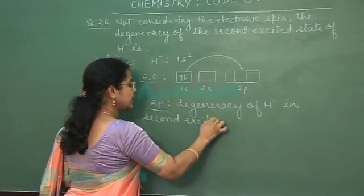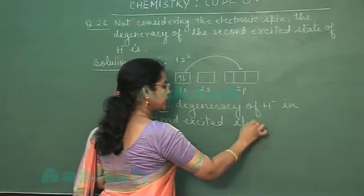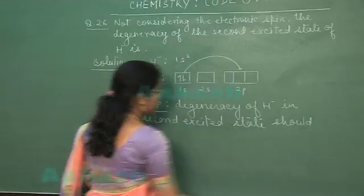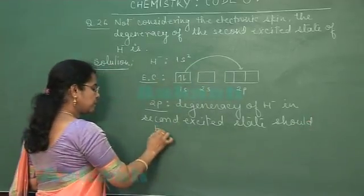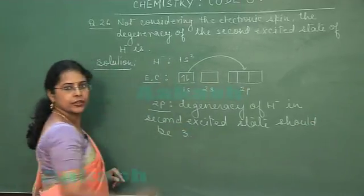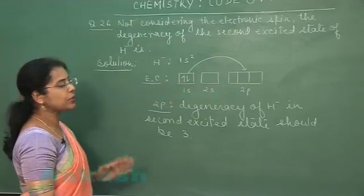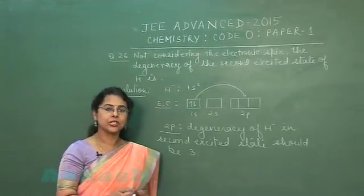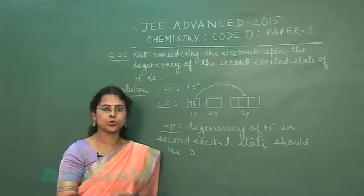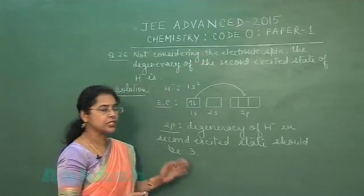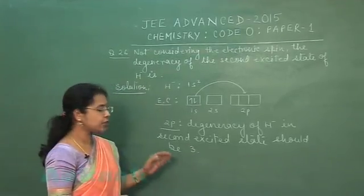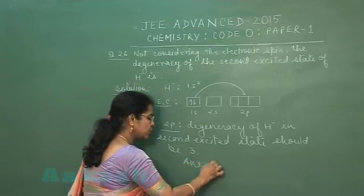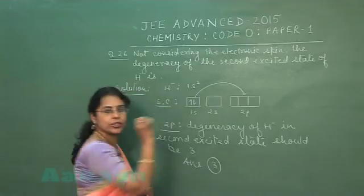In the second excited state, the degeneracy should be taken as 3. The 2p subshell is made up of 3 degenerate orbitals. So the degeneracy of H⁻ should be taken as 3, and the answer to this question is 3.